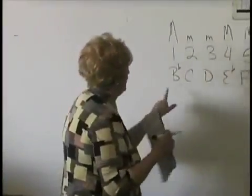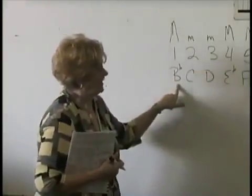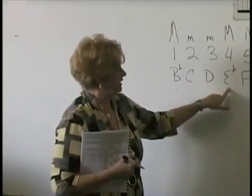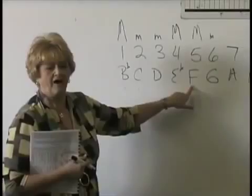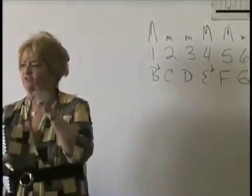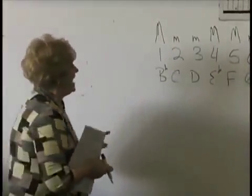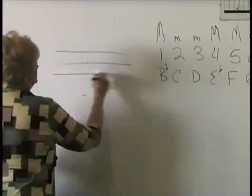All right. What's chord number one? B-flat. Chord number four? E-flat. And chord number five? F. Those are the three chords you will see every time you pick up a piece of music.